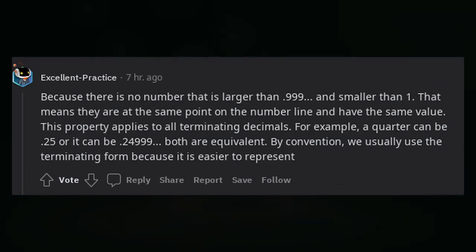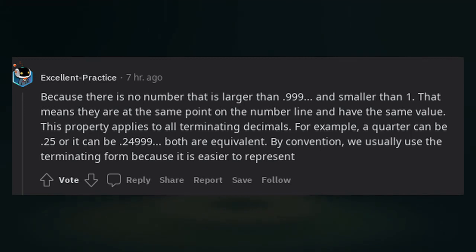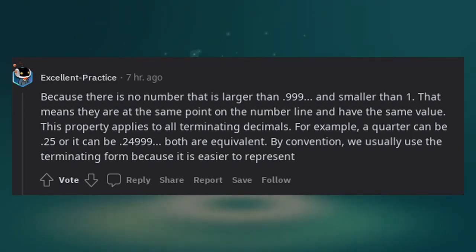Because there is no number that is larger than 0.999 repeating and smaller than 1, that means they are at the same point on the number line and have the same value. This property applies to all terminating decimals.